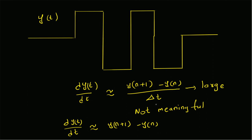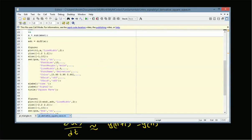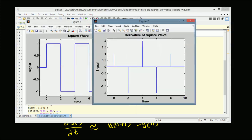If the signal has discontinuities — like a square wave — the sudden large changes make dividing by the sampling interval meaningless. So we redefine the approximation: the derivative at discontinuities equals y(n+1) minus y(n), ignoring the sampling interval. To compute this discrete difference in MATLAB, we apply the `diff` function, which gives a good discrete approximation of the derivative of the square wave.